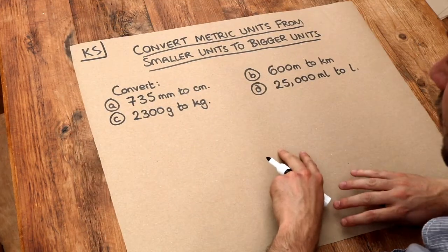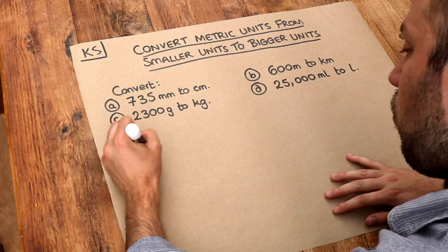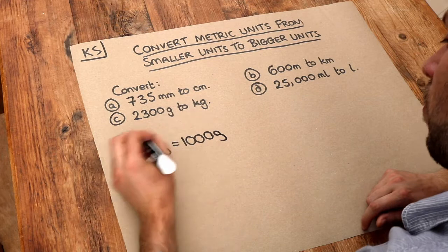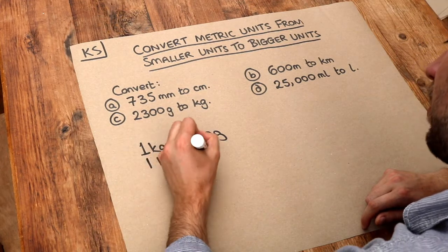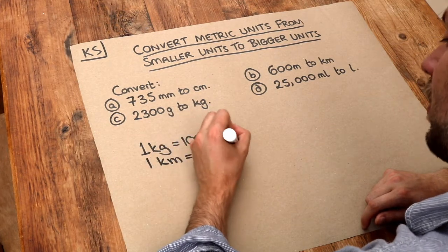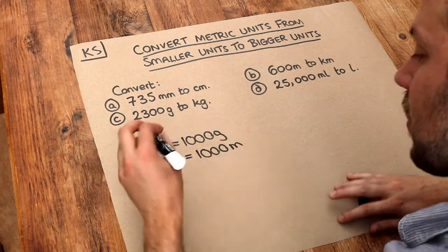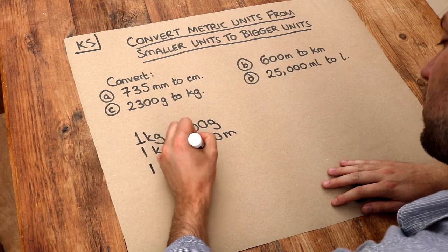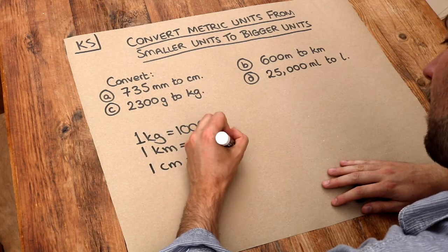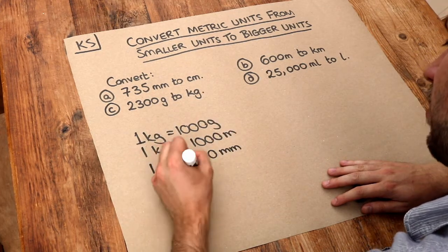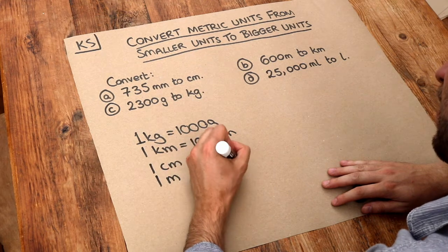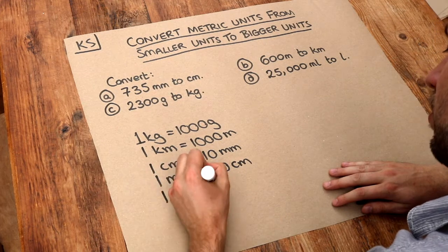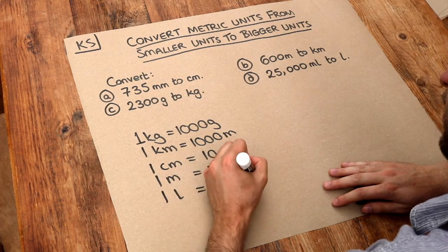Let's remind ourselves of those conversions. One kilogram is a thousand grams. One kilometer is a thousand meters, remembering that the 'k' means a thousand. One centimeter is 10 millimeters. One meter is a hundred centimeters. And one liter is equal to a thousand milliliters.